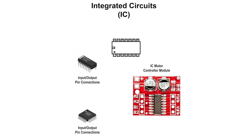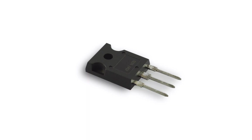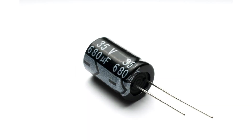Integrated Circuits is an assembly of electronic components fabricated as a single unit, in which miniaturized active devices and passive devices and their connections are built up on a thin substrate of semiconductor material. The electronic components consist of resistors, transistors, and capacitors which are connected together to achieve a common goal.